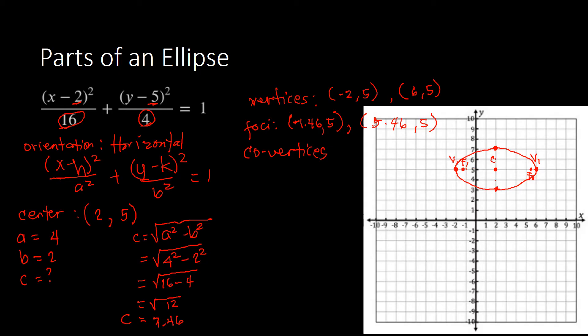Before finishing, I need to identify the coordinates of the co-vertices. We have co-vertex at (2, 3) and the other co-vertex at (2, 7). That is how we identify the parts of an ellipse using the graphical method.